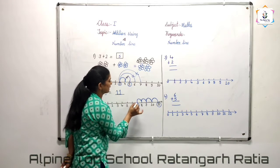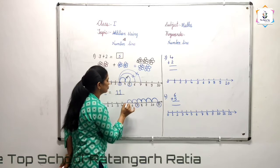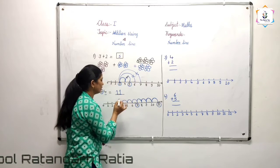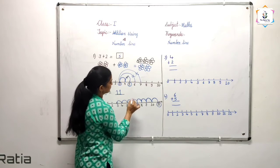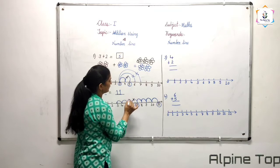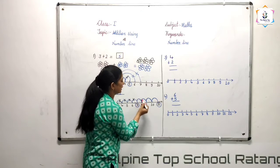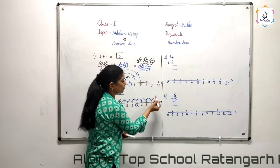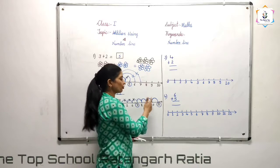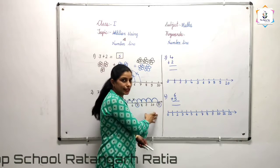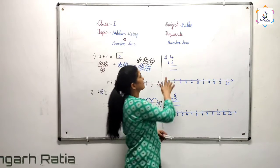If we are moving like this — 1, 2, 3, 4 — to the left, this is the wrong method. All this is wrong. We have to move only forward, to the right side, when we are doing addition sums.